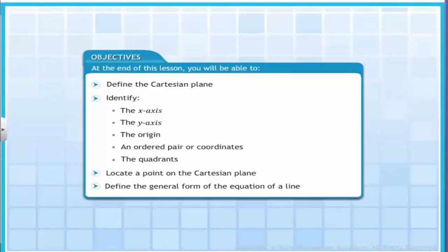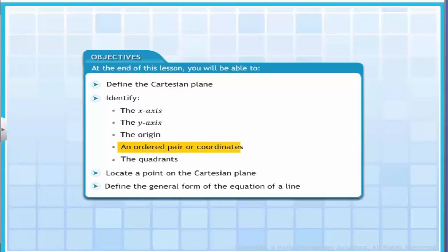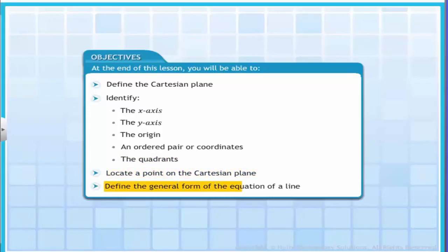In this lesson, you will learn about the Cartesian plane and how to use it to plot points. At the end of this lesson, you will be able to define the Cartesian plane, identify the x-axis, the y-axis, the origin, an ordered pair or coordinates, and the quadrants. You will also learn to locate a point on the Cartesian plane and define the general form of the equation of a line.